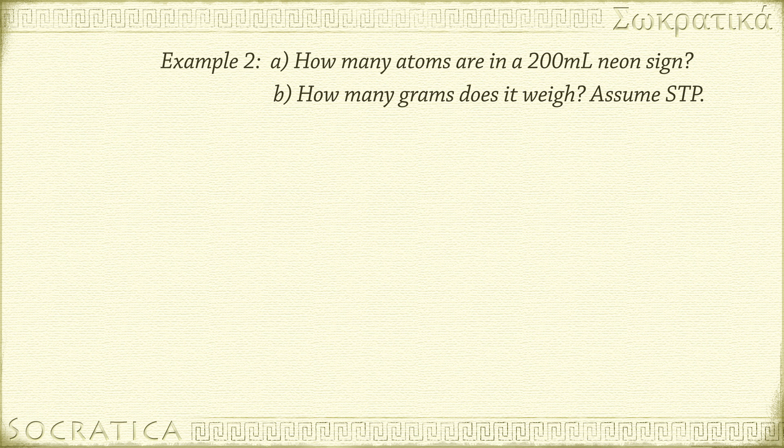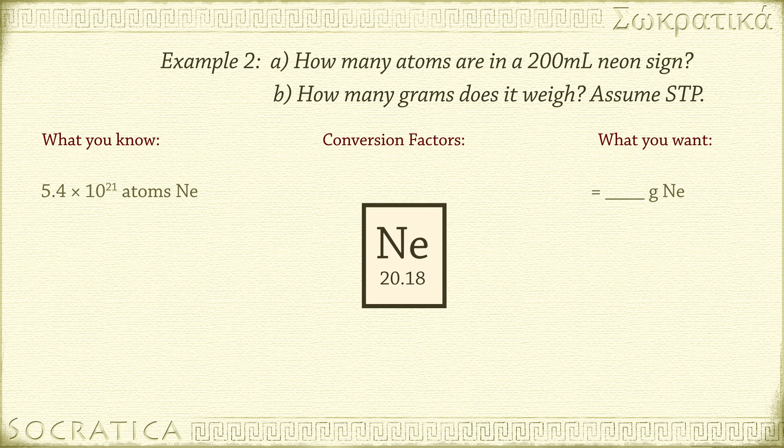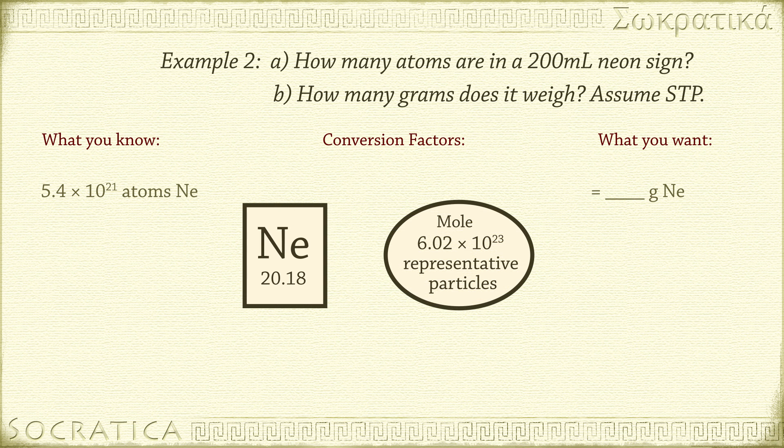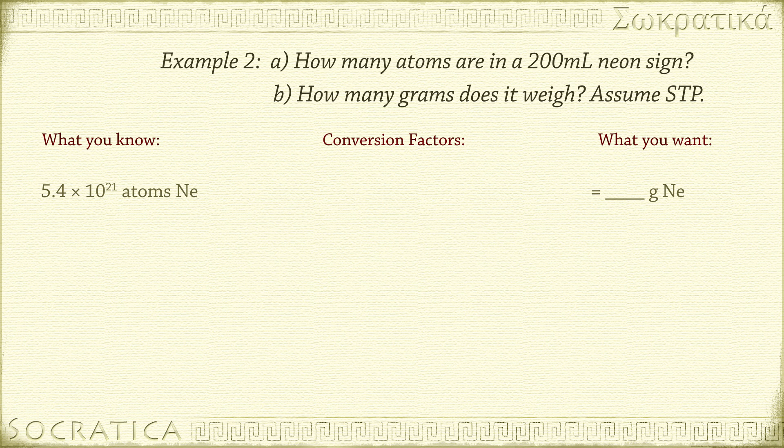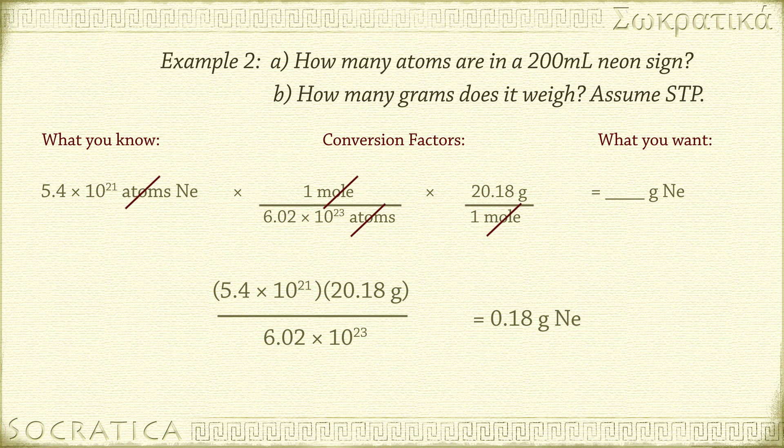Now what about the next part of the question? Given this number of atoms of neon, how many grams is that? We can use the molar mass of neon from the periodic table, and Avogadro's number, as conversion factors. 5.4 times 10 to the 21 atoms of neon times 1 mole of neon per 6.02 times 10 to the 23rd atoms of neon times 20.18 grams of neon per 1 mole of neon equals some number of grams of neon. Check to see your units cancel. We get 0.18 grams of neon.